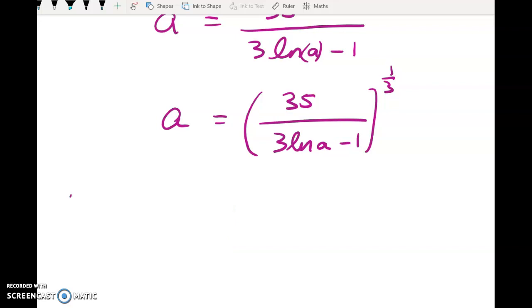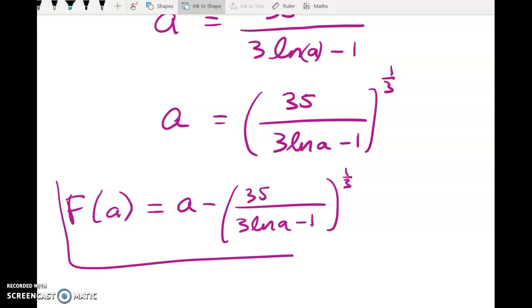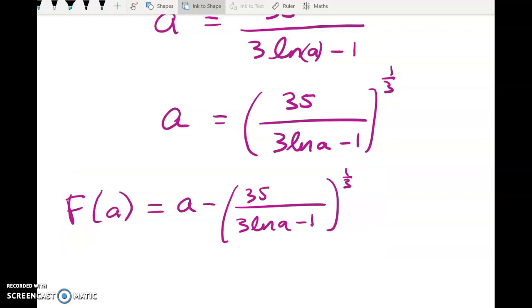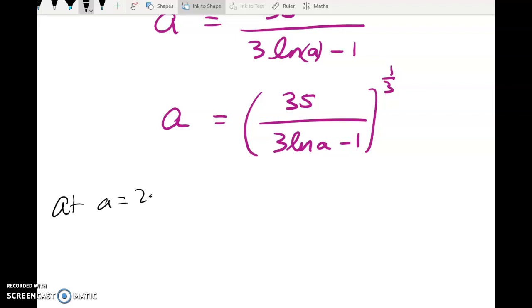Well, the other way to do it is to set up with this notation, F of A is equal to the difference of the two sides, and to show that it's positive on one side and negative on the other. I don't mind which way you use, they're both fine, they're both covered in the marked schedule, but in this case, I didn't do the big F of A way, I just looked at what it was on both sides. So just a little bit of communication here really helps. So at A equals 2.4, what have I got? Well, I've got 35 over 3 log of 2.4 minus 1 to the power of 1 third is equal to 2.781. So here, I've got 2.4 is less than 2.781.